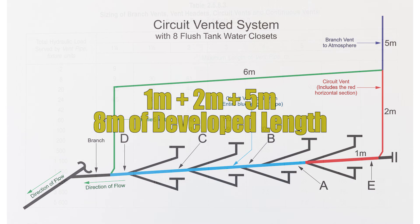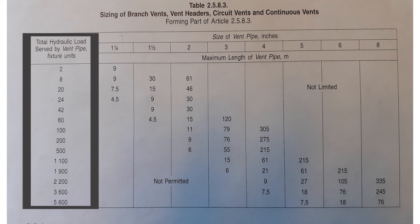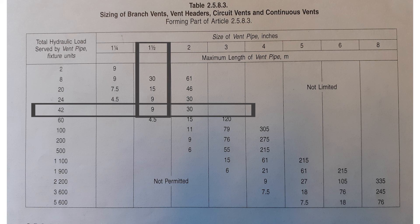Now we need to look at table 2-5-8-3. I go down the hydraulic load column on the far left — I have 32 fixture units, so between 24 and 42 I have to go to 42. Going across to the right, there's a blank space on the 1-and-a-quarter-inch column, but I can go up to 9 meters on 1-and-a-half-inch. Since I only have 8 meters of developed length, 1-and-a-half inches is good.